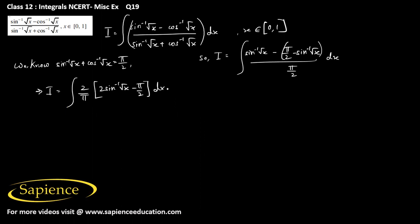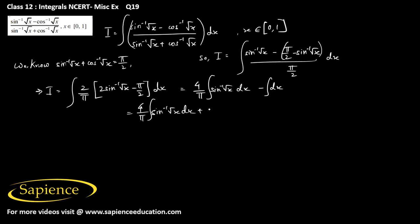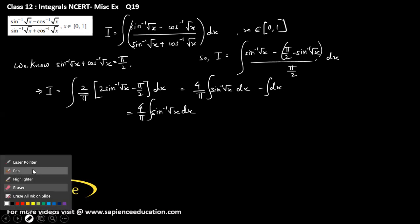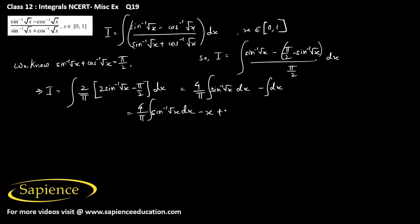So this will be equal to 4 by pi integral sine inverse root x dx, then minus integral dx. This will be 4 by pi integral sine inverse root x dx, minus x, plus c. Now we need to find this integral.